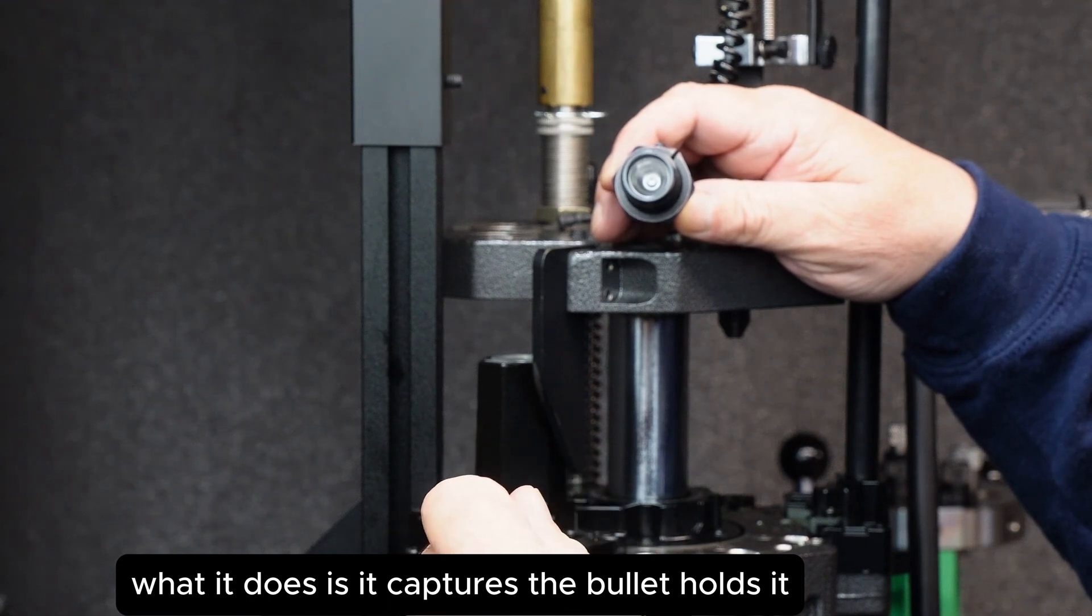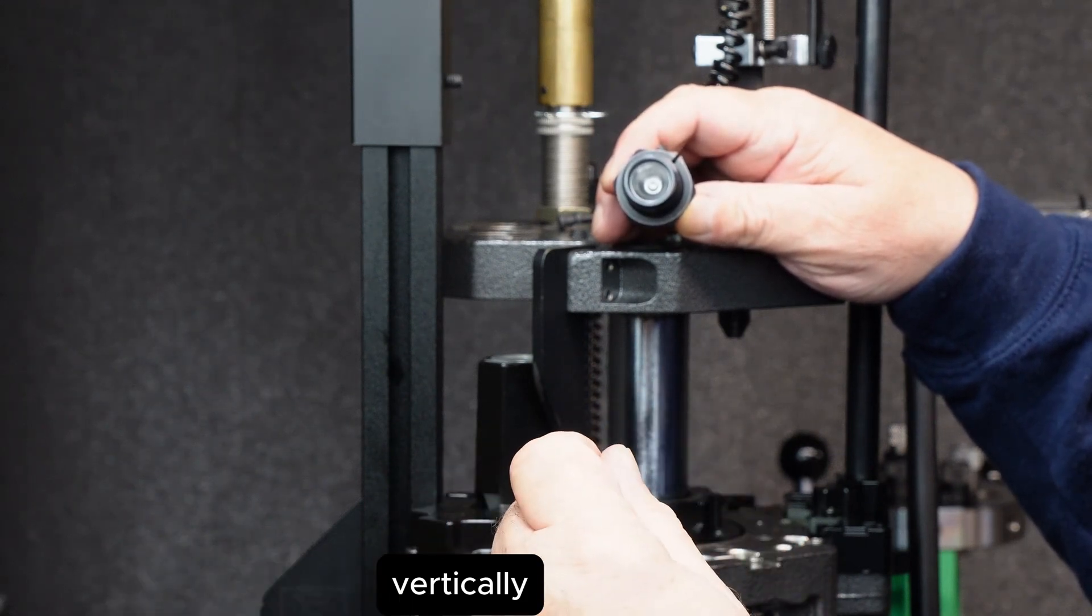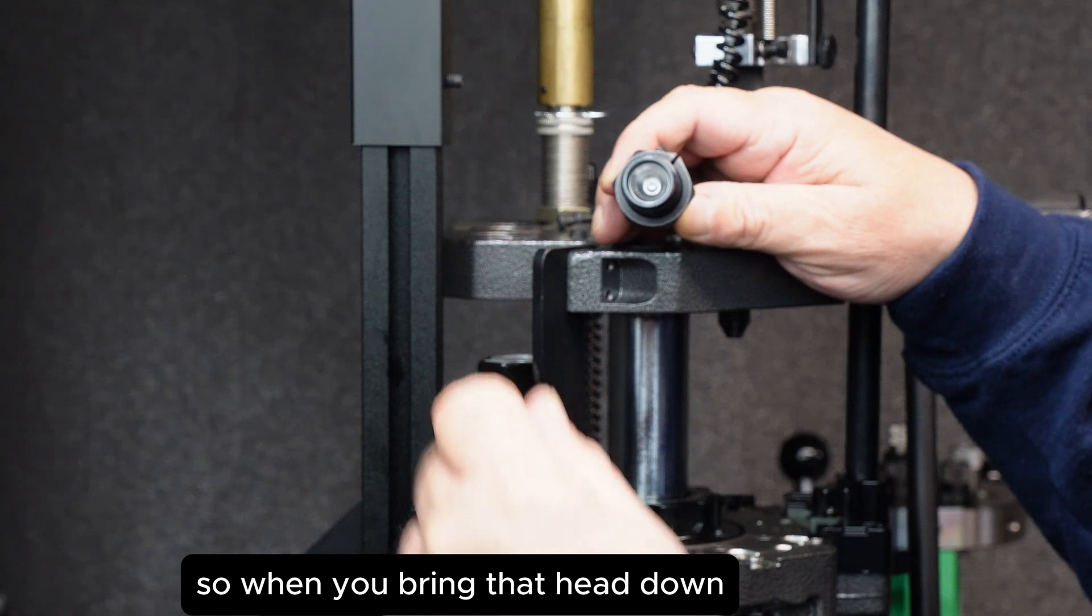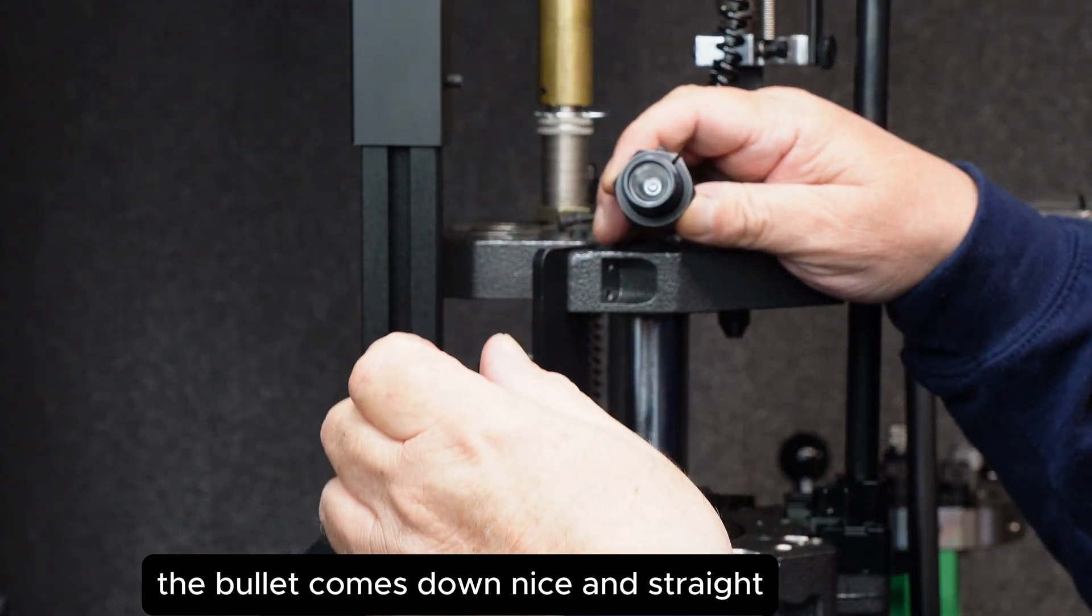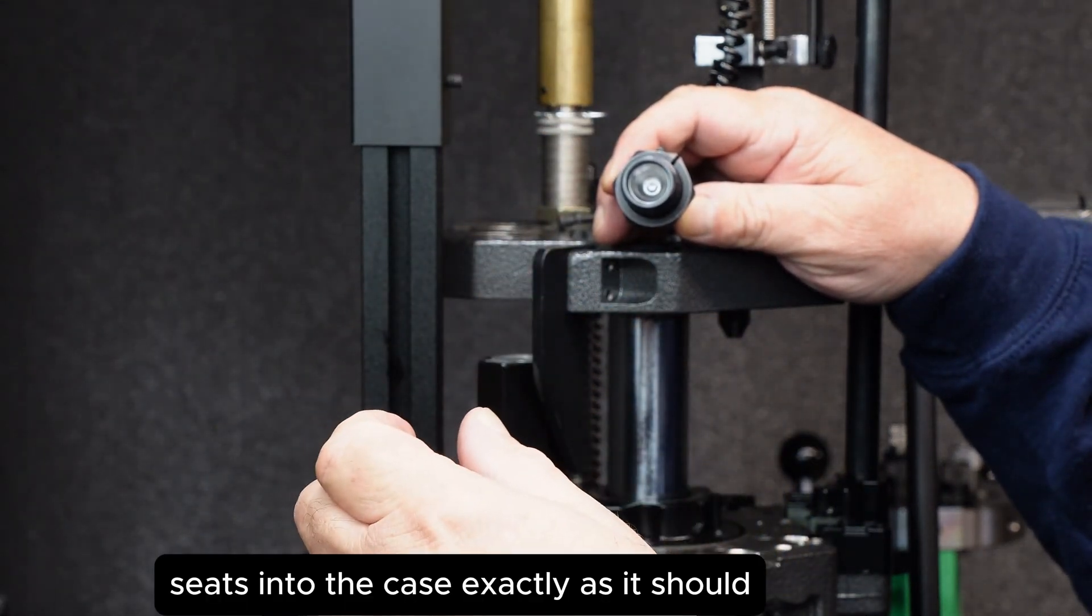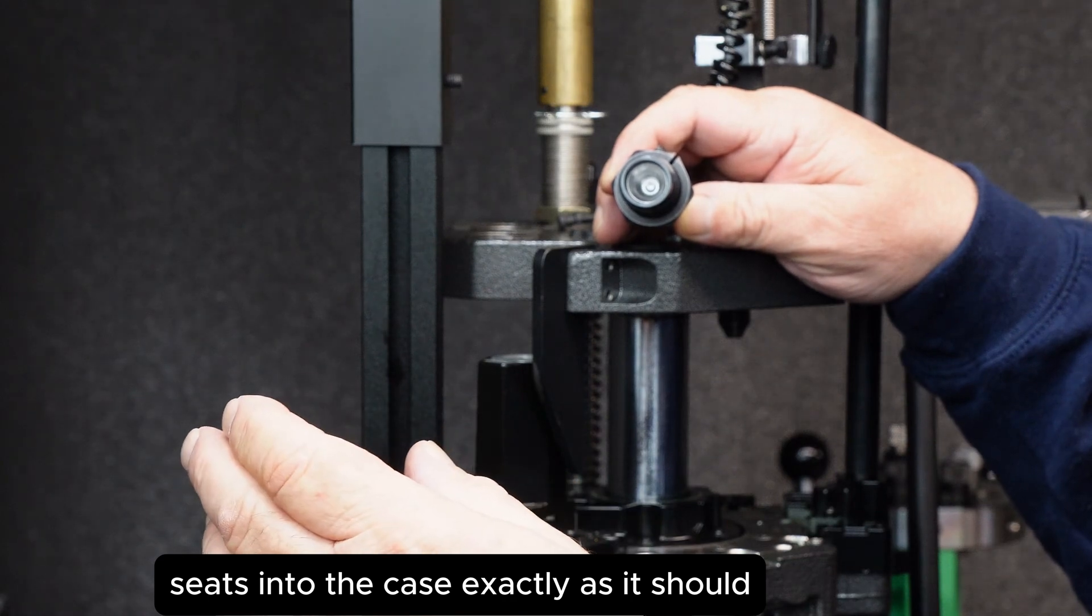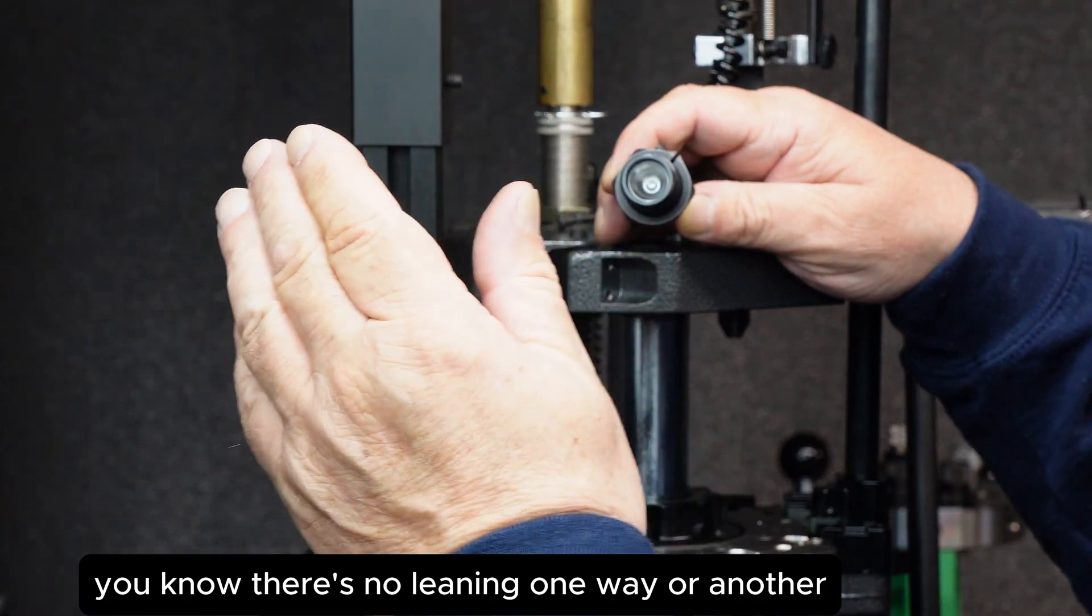What it does is it captures the bullet, holds it vertically, so when you bring that head down the bullet comes down nice and straight, seats into the case exactly as it should. There's no leaning one way or another that can cause a bulge in your case or around the bullet after you crimp.